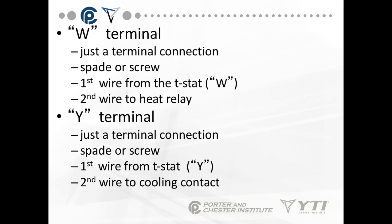The W terminal is just a terminal connection. It doesn't do anything on the fan center, but it's just a nice place to put all your wire junctions for the heating side of the system. The first wire comes from the thermostat W, the second wire would go to the heat relay in the furnace or the piece of heating equipment.